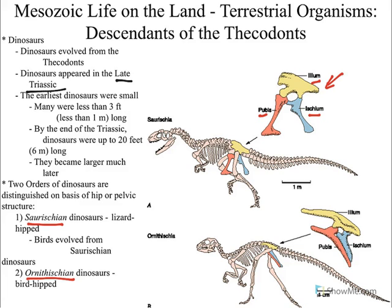The difference between the Saurischians and the Ornithischians lies in the Ischium and the Pubis. In Saurischians, the Pubis points forwards and the Ischium points to the back. So here on good old T-Rex, we've got the forward-facing Pubis. However, if we look at Ornithischians, the Pubis is rotated backwards — it's rotated in the same direction as the Ischium, pointed to the back. That's going to be your anatomical difference to tell these two groups of dinosaurs apart.